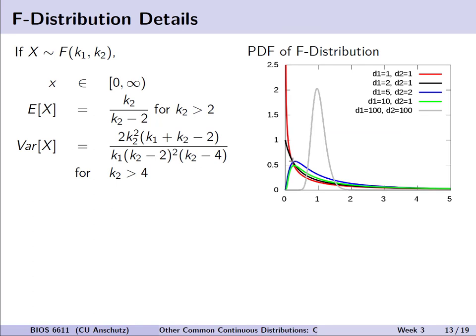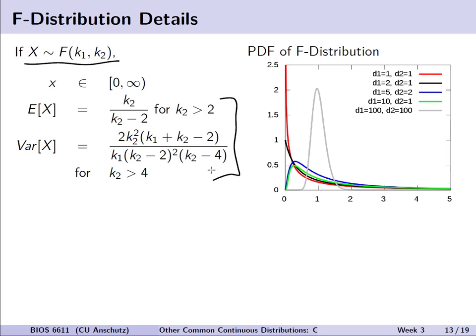For the f-distribution, realizations must be between zero and infinity — no negative observed values. The expectation and variance are more complicated than for the chi-squared, but closed forms exist for calculating those values. As shown in the figure on the right, different combinations of the degrees of freedom d1 and d2 produce different shapes, ranging from shapes resembling chi-squared distributions to something vaguely normal-looking with a peak as the degrees of freedom get much larger.